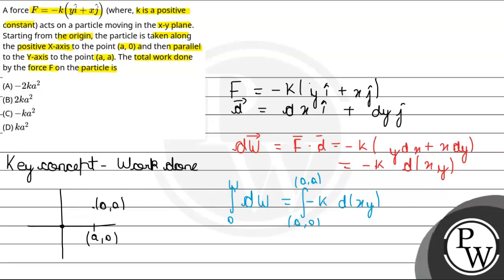To k wala constant term to bahar aa jaega, minus k wala term, to kyuki constant hai. Andar bachega, xy, and iska limit ho jaega